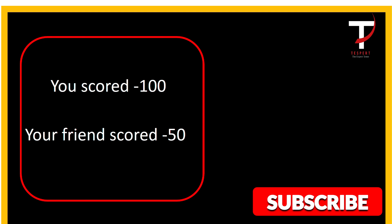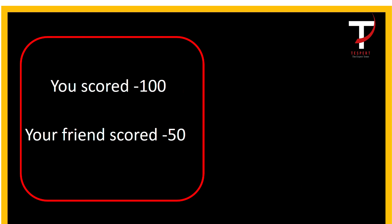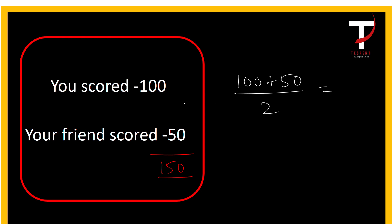Let's say you scored 100 marks in an exam and your friend scored 50 marks, so the total marks are 100 plus 50, which is 150. To calculate the average, we do 100 plus 50 divided by the number of candidates, that is 2. So the average mark scored by your friend and you is 75. This means on average both your scores are considered as 75.